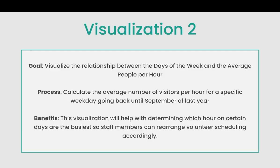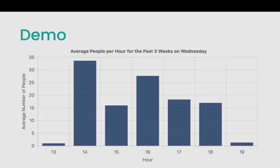For visualization 2, our goal was to visualize the relationship between the days of the week and the average people per hour. This should help with staffing — allocating what hours of the day for a certain weekday should be staffed with the most people, so you can rearrange staff scheduling accordingly.